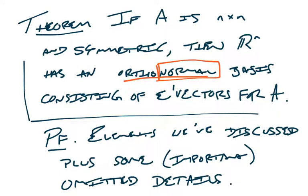A lot of the proof elements we've already discussed — what happens with distinct eigenvalues gives orthogonal eigenspaces, and Gram-Schmidt handles multidimensional eigenspaces. However, there are some important details I'm omitting, such as how you always know you'll get exactly n vectors. That is a non-trivial fact requiring more linear algebra than I want to get into right now.